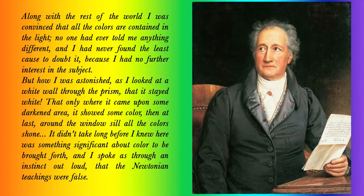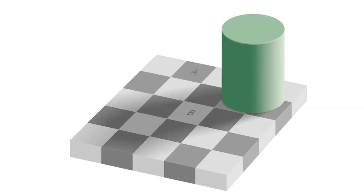Goethe wrote: 'Along with the rest of the world, I was convinced that all colours are contained in the light. No one had ever told me anything different. But how I was astonished as I looked at a white wall through the prism — that it stayed white. That only where it came upon some darkened area did it show colour. Then at last, around the windowsill, all the colours shone. I knew there was something significant about colour to be brought forth, and I spoke through instinct that the Newtonian teachings were false.'